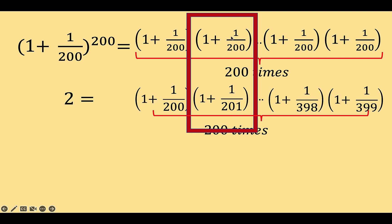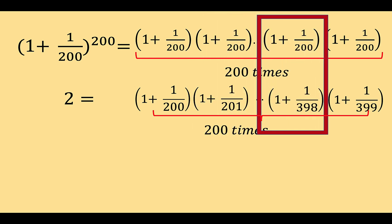When a fraction has the same numerator, the fraction with the lower denominator is greater than that fraction with higher denominator. So we know that 1 plus 1 over 200 is greater than 1 plus 1 over 201. So this factor at the top is greater than the factor at the bottom. Look at this next pair also. 1 plus 1 over 200 and 1 plus 1 over 398.